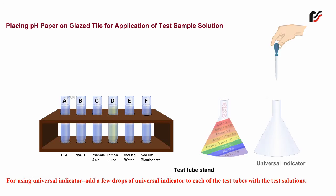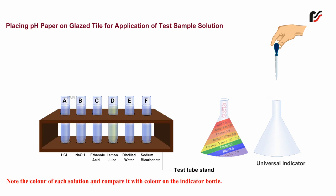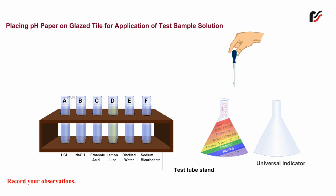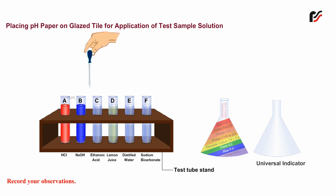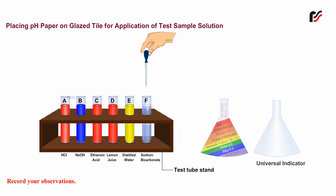For using universal indicator, add a few drops of universal indicator to each of the test tubes with the test solutions. Note the color of each solution and compare it with the color on the indicator bottle, then record your observations. Adding universal indicator to each of the above solutions gives the same result as with the pH paper. Note that the color and pH values may vary depending upon the concentration of the solution.